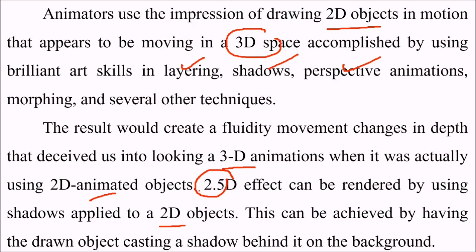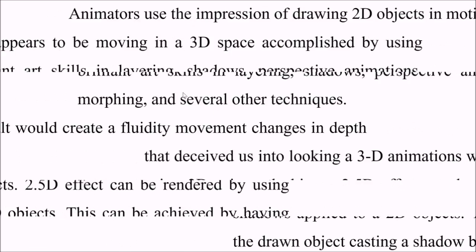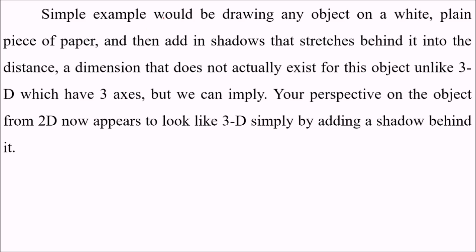This can be achieved by having the drawn object cast a shadow behind it on the background. A simple example would be drawing any object on a white or plain piece of paper and then adding shadows that stretch behind it into the distance — a dimension that does not actually exist for the object, unlike 3D which has three axes. The projection on the object from 2D now appears to look like 3D simply by adding a shadow behind it.